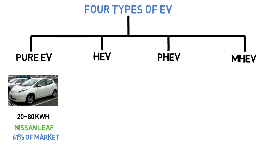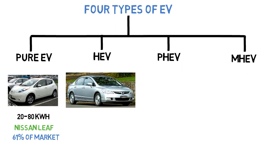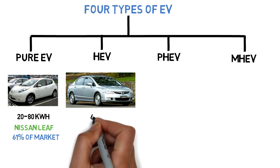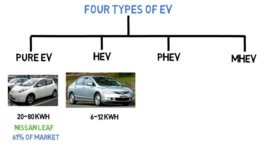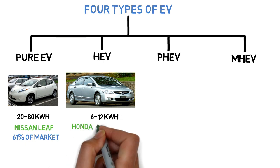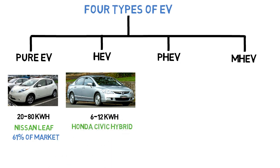The second type of electric car is the hybrid electric vehicle. A hybrid has an engine and an electric motor. The batteries get charged by the engine and cannot be charged externally. The battery pack size is medium, 6 to 12 kilowatt hours. An example in this category is the Honda Civic hybrid.